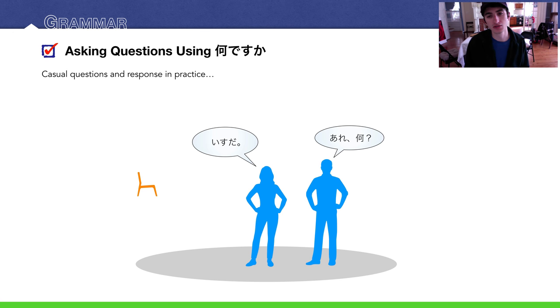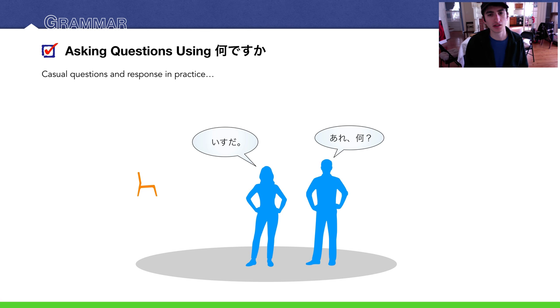Let's look at this in practice. She's asking あれなに？ and she replies いすだ — 'It's a chair.'